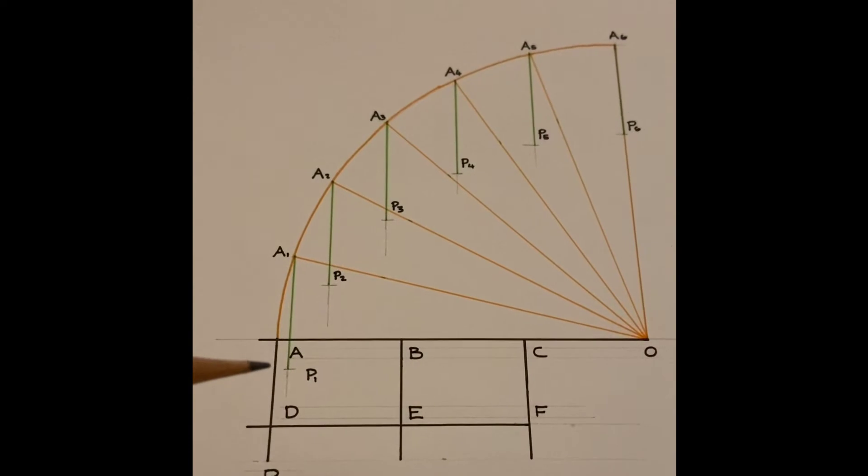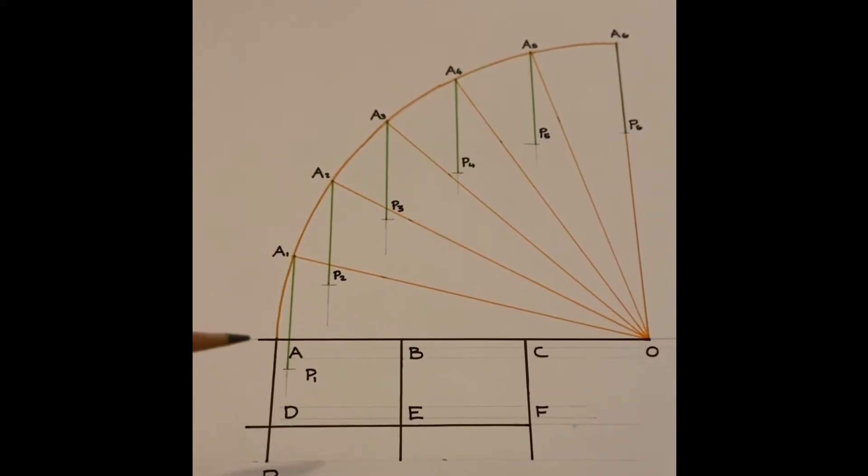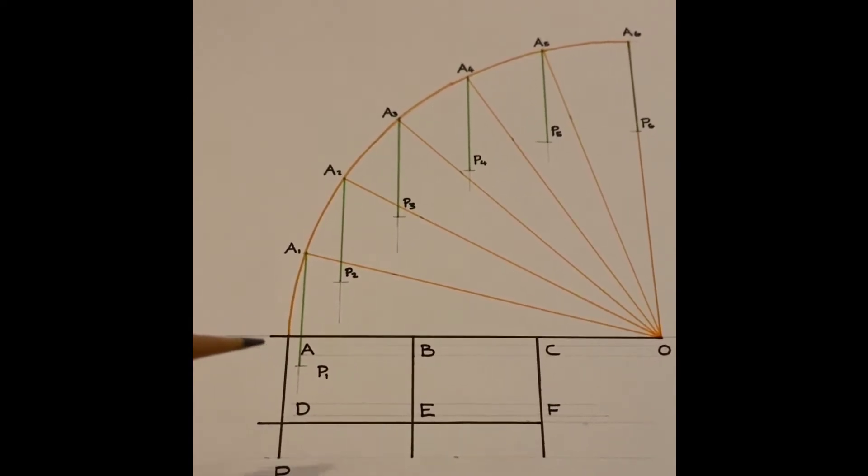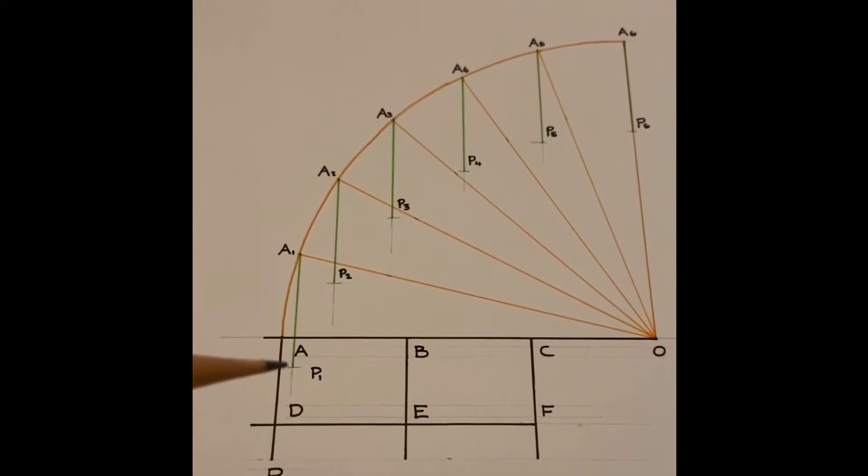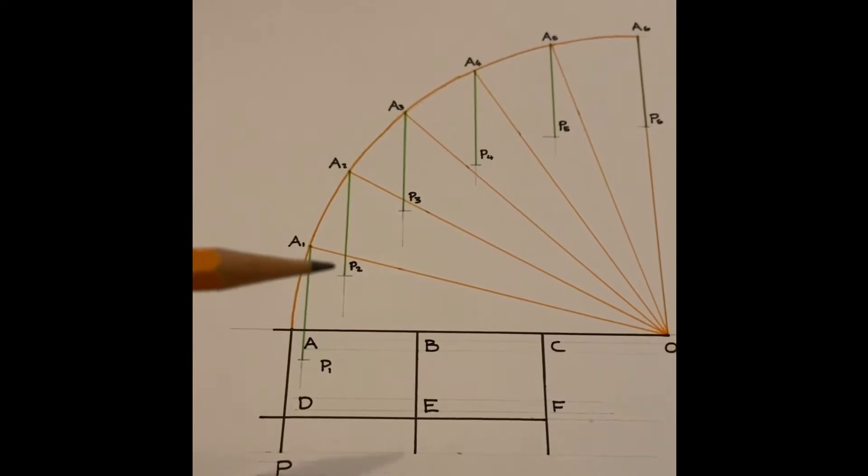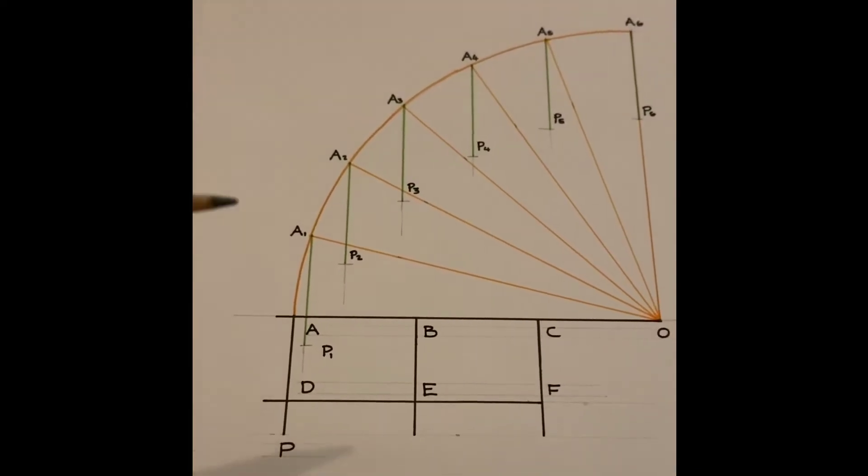So after dropping the vertical line down from A and then taking this distance from A to P which remains common we mark that distance down each of the lines and that gives us P1, P2, P3 and so on.